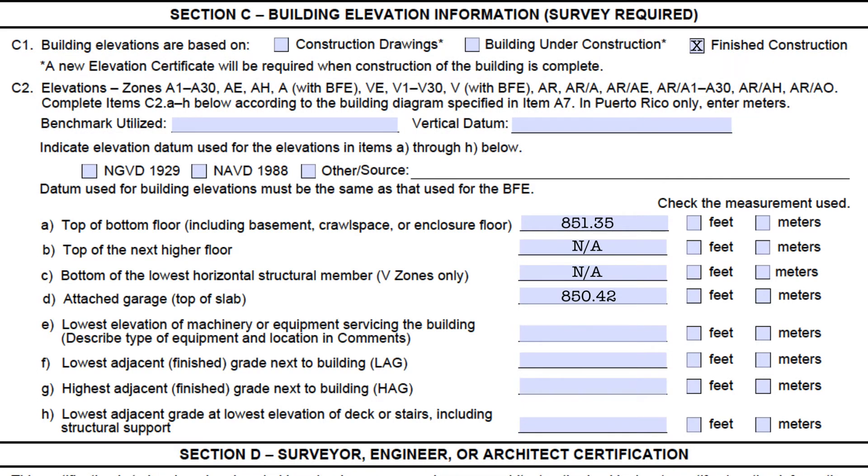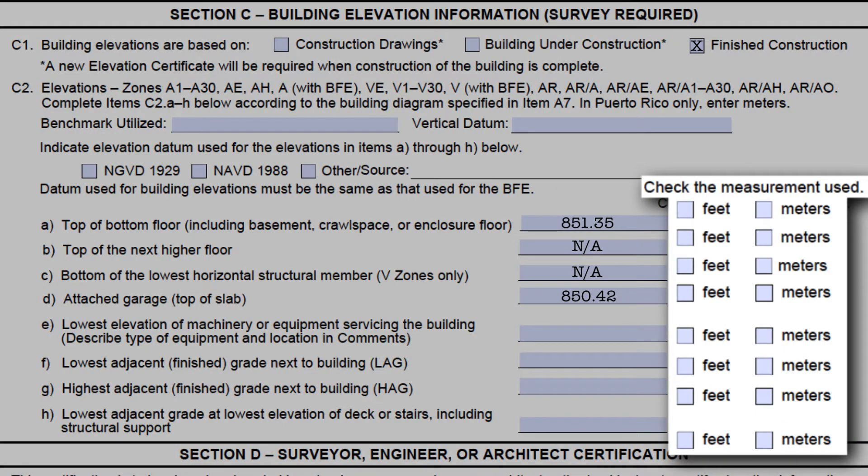The last thing to note for the elevations is that feet or meters should always be marked. Meters is only used in Puerto Rico since the FIRMs show elevation in meters, but everyone else should have feet marked. Usually if these are left blank, we will not consider it as an error, as everyone other than Puerto Rico uses feet anyway. Like the BFEs in section B, elevations in section C should be to the nearest tenth of a foot, or nearest tenth of a meter in Puerto Rico. It will not be counted as an error if they are to the nearest hundredth or thousandth, but that level of accuracy is not truly needed.